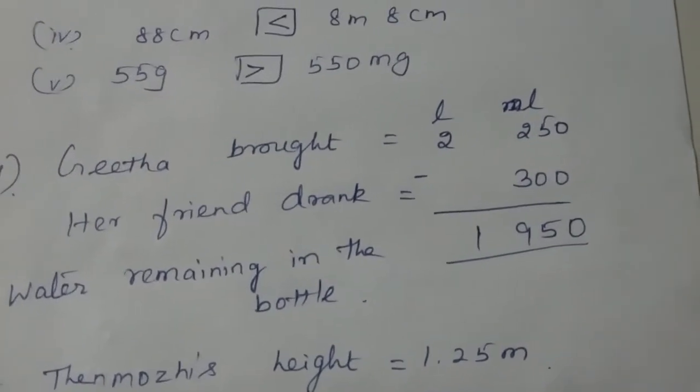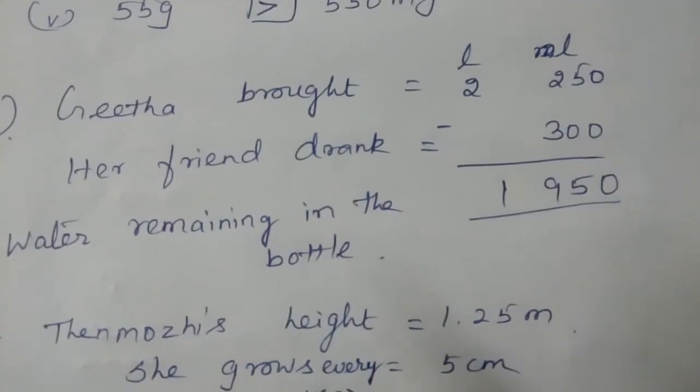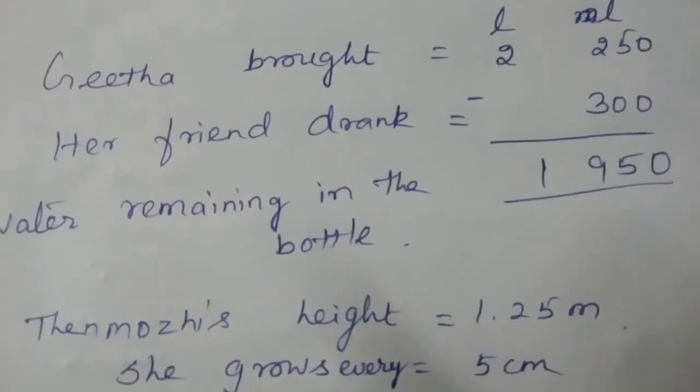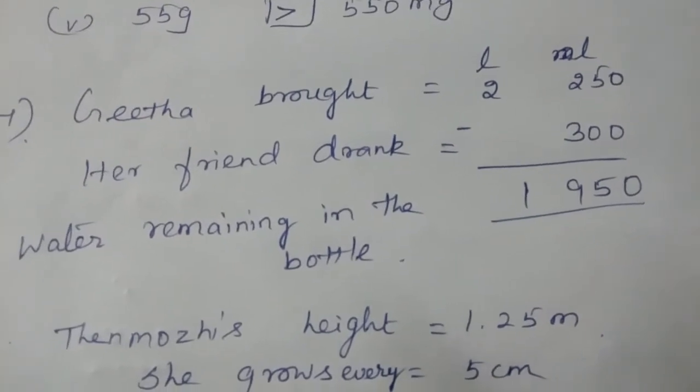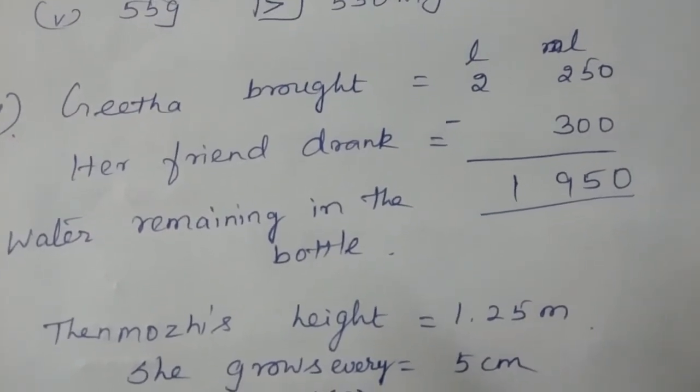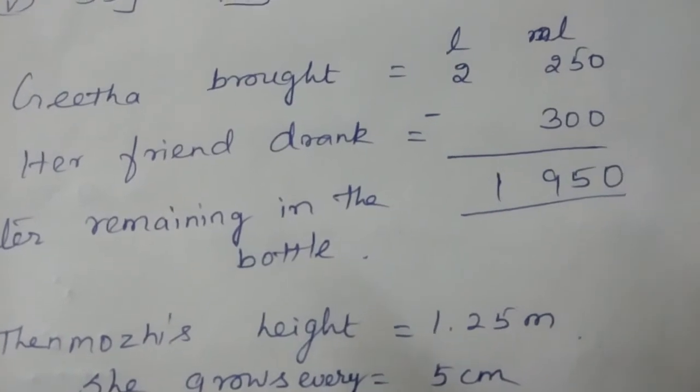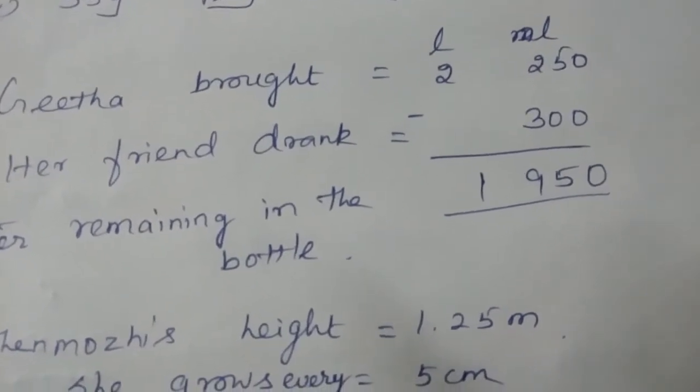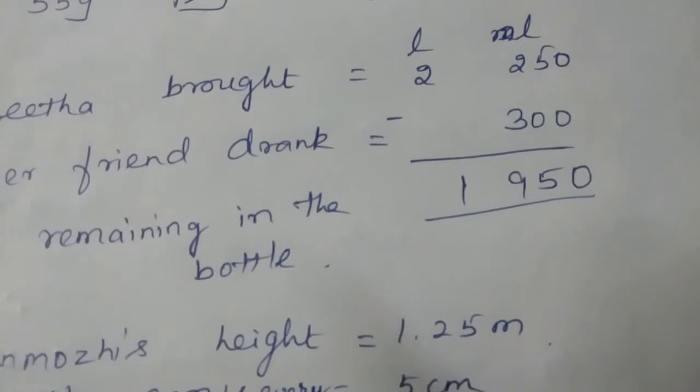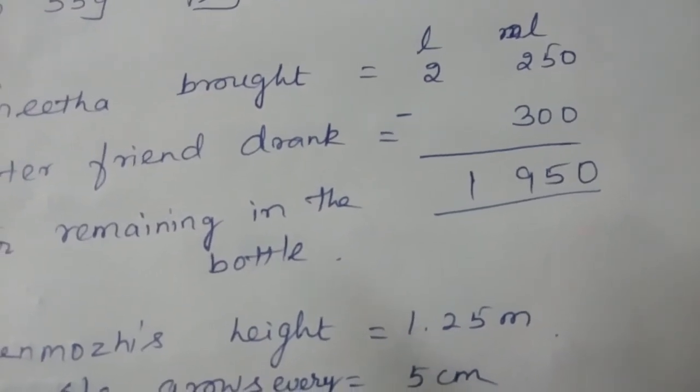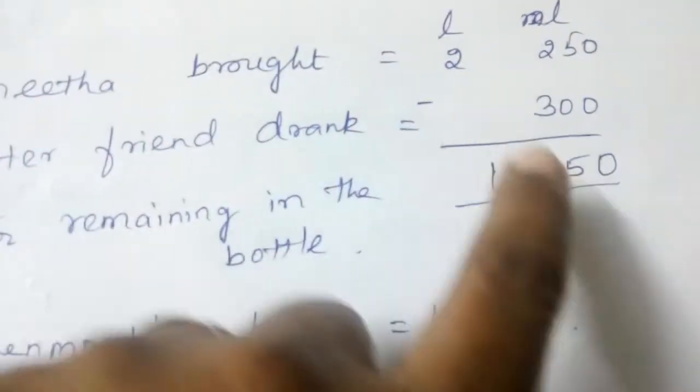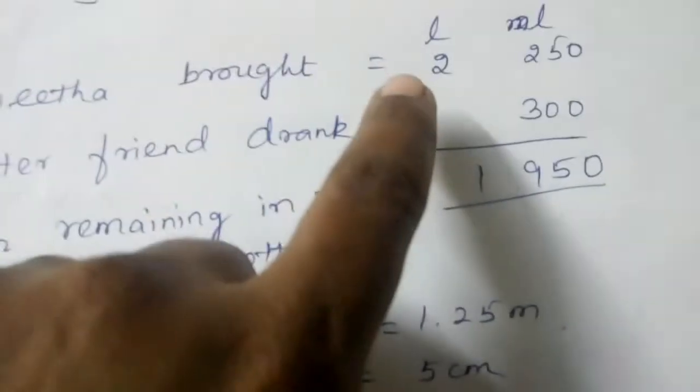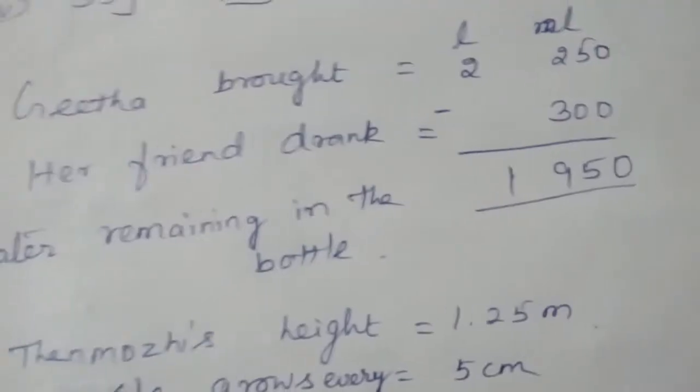Geeta brought 2 liter and 250 milliliter. Her friend drank 300 milliliter. So the water remaining in the bottle - whenever it comes like remaining, we have to go for the subtraction part. You will be getting the value as 1 liter 950 milliliter. 0 minus 0, 5, and then you will borrow 1 from the top, so you will get 12. 12 minus 3 is 9, and the remainder is 1. So 1 liter and 950 milliliter.